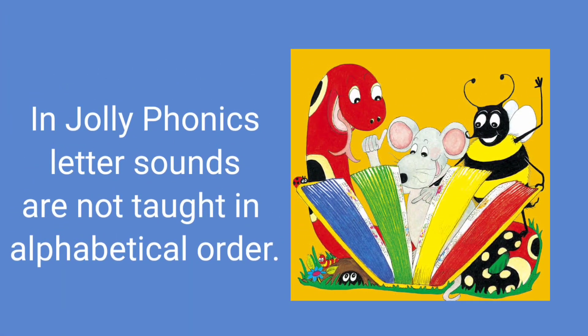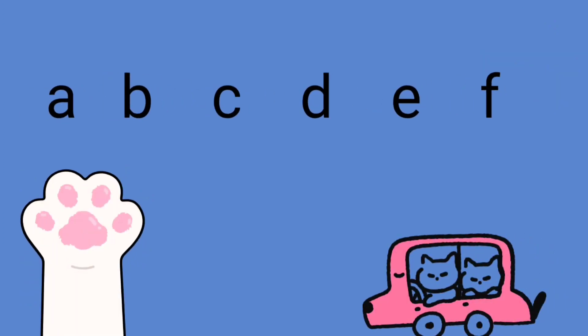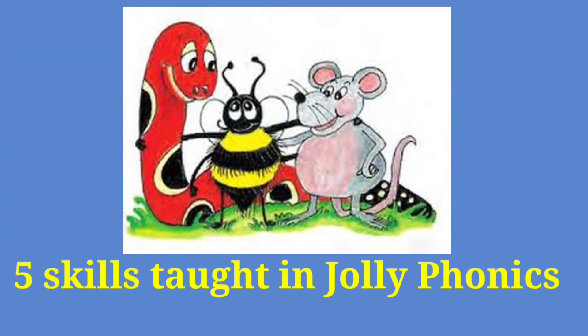There is a reason why in Jolly Phonics the letters are put in different groups and in a particular sequence instead of alphabetical order. When children are taught the first six sounds, they are learning two vowel sounds and four consonant sounds which can form the maximum number of three-letter words — like 'sit', 'pin', 'nap', 'tin', 'tip'. If letter sounds were taught in alphabetical order, children would not be able to form many words. This is why these sounds are taught first.